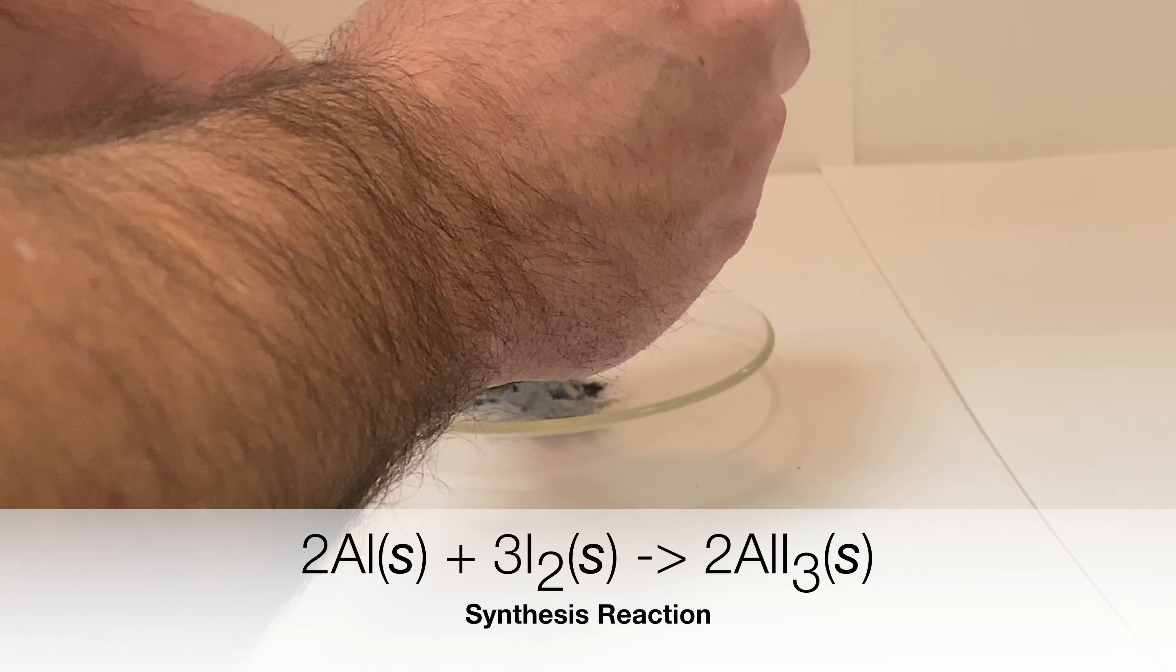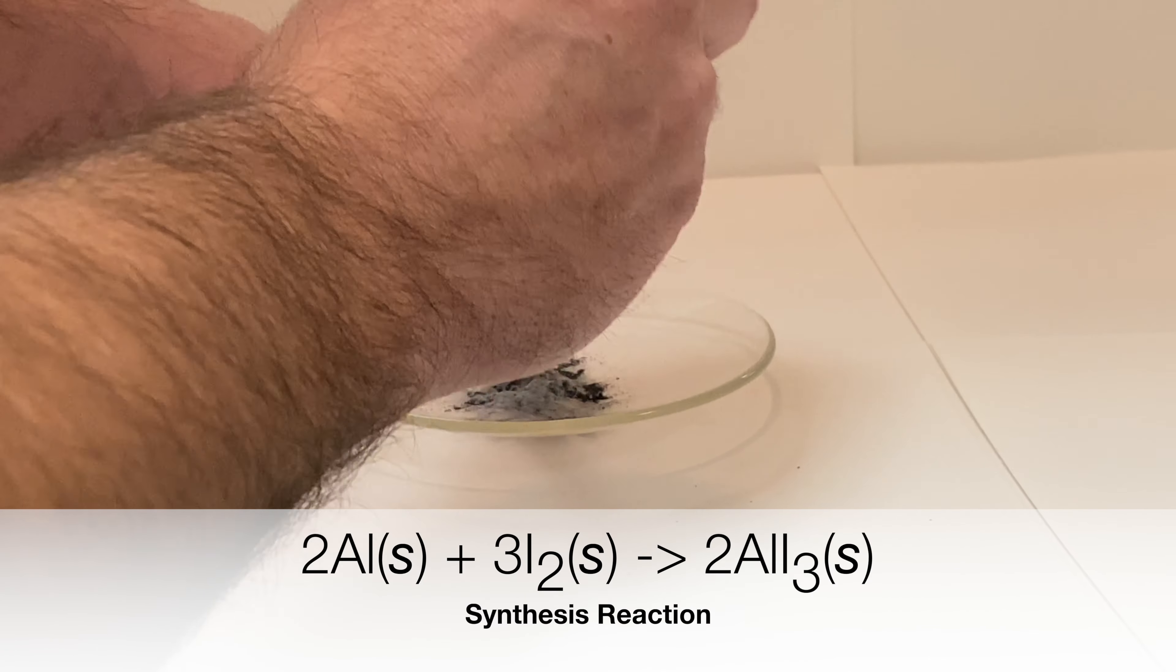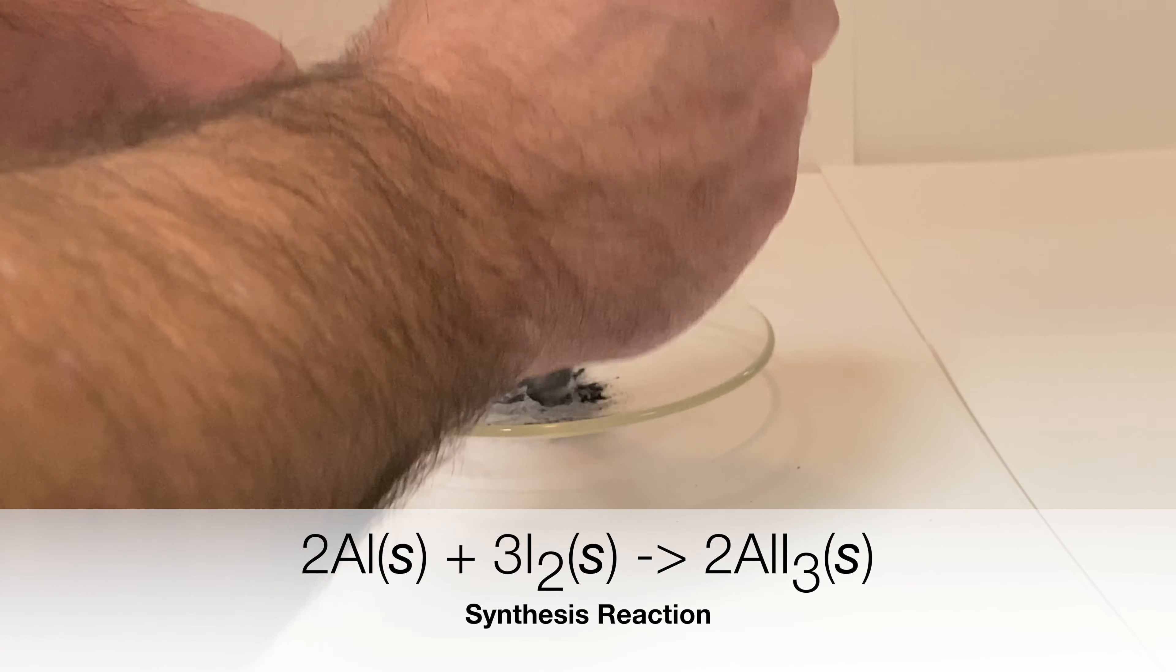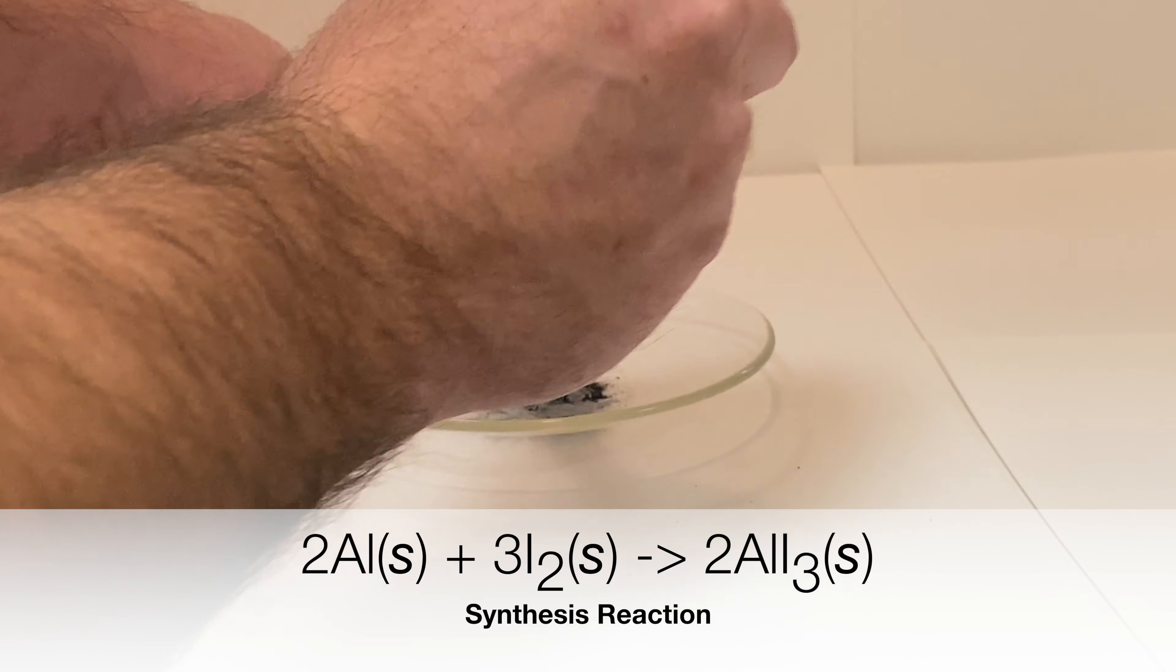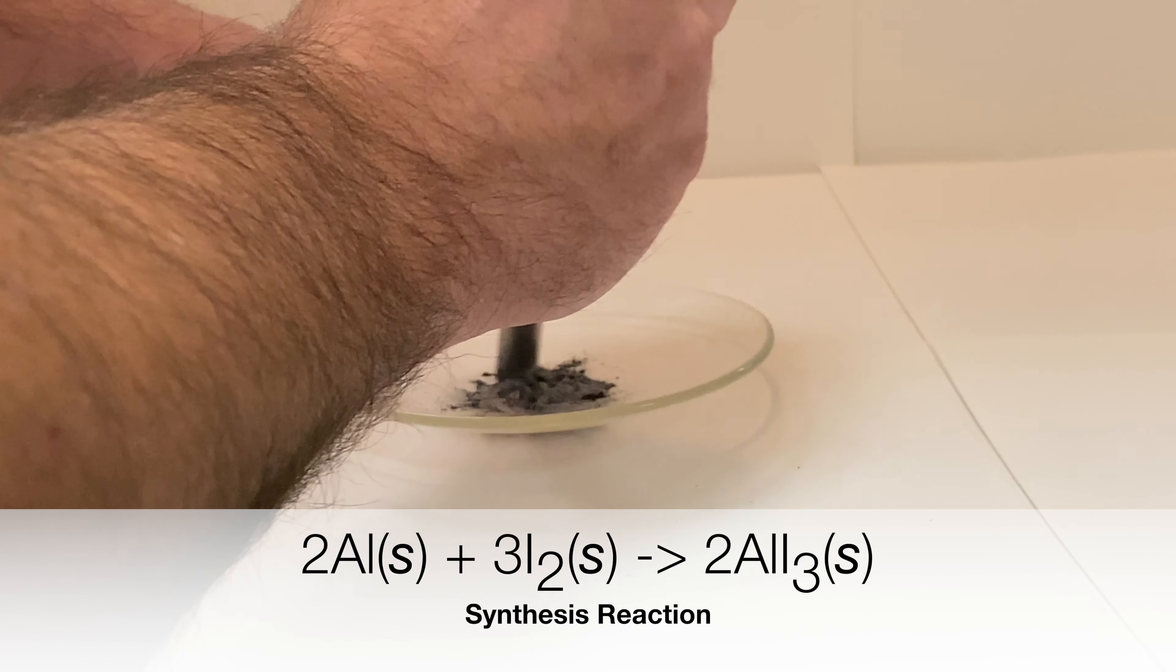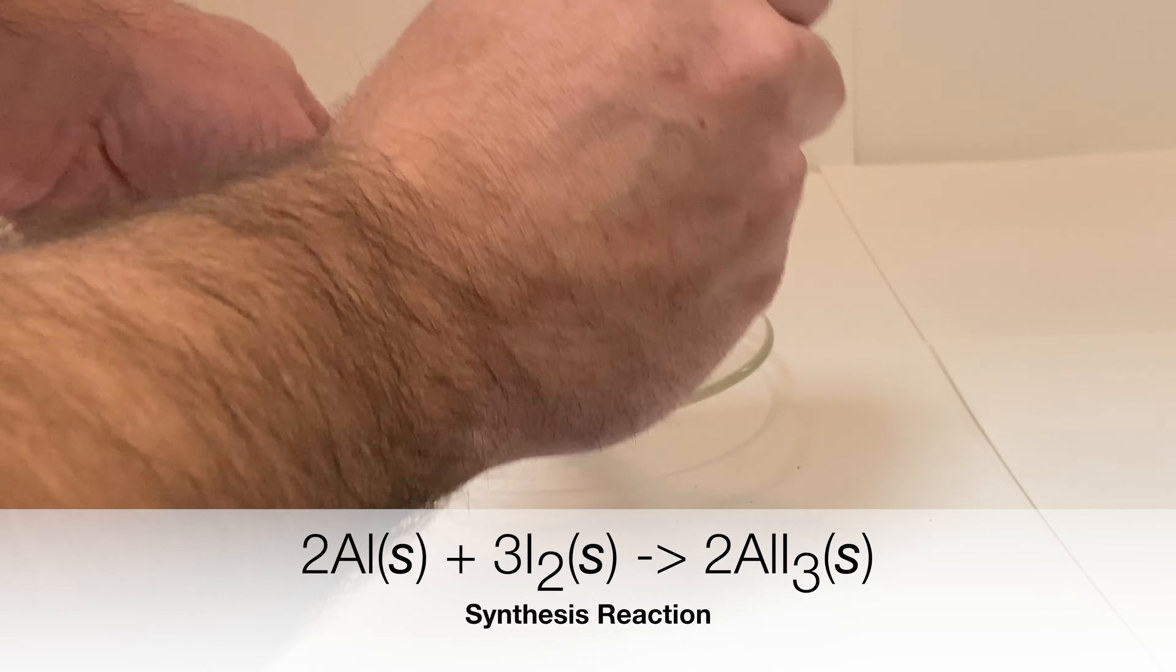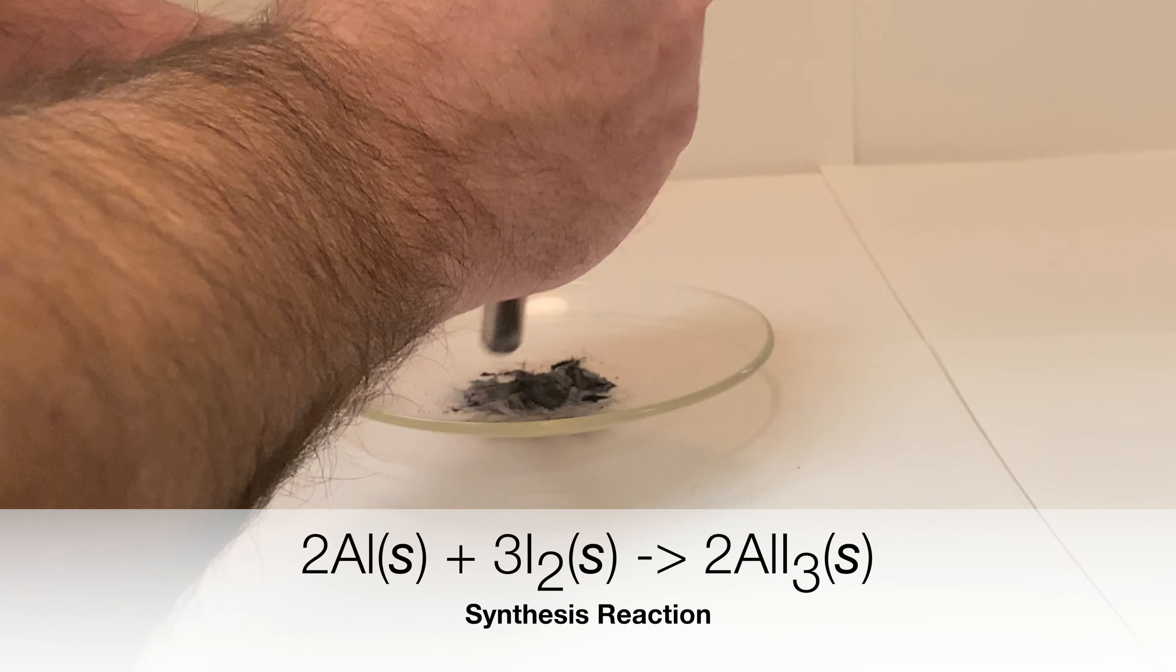The two reactants, in this case, are elemental iodine and elemental aluminum. When they combine, they form a more complex substance, a compound, known as aluminum iodide.